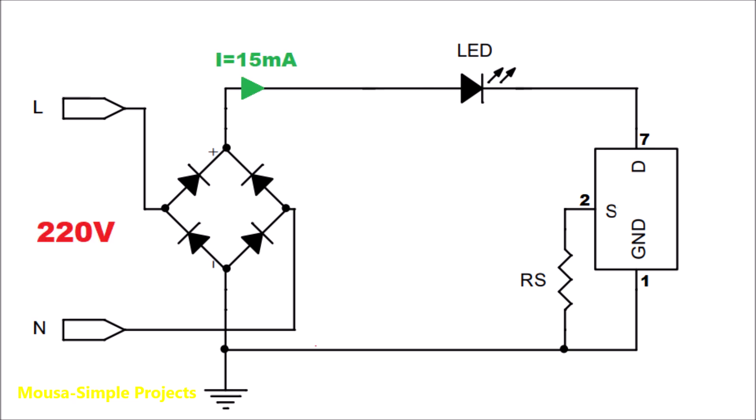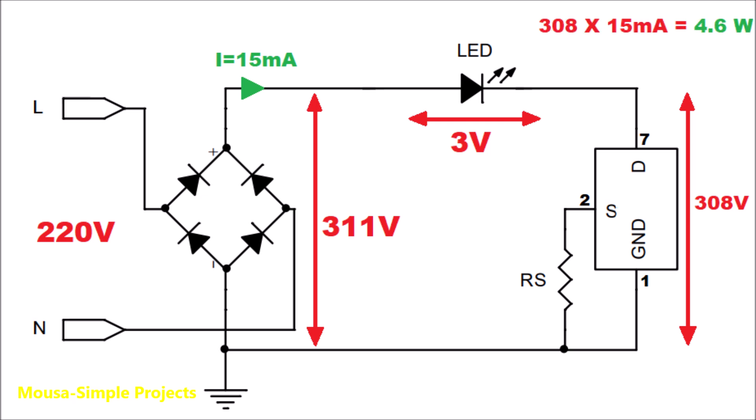So for example, if the input voltage is 220V RMS, the output of the rectifier will be 311V DC. This 311V is divided between the IC and the LED. Let's say 3V here and 308V here. That means 4.6W power dissipation across the IC.